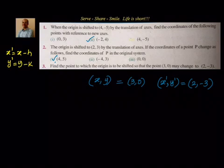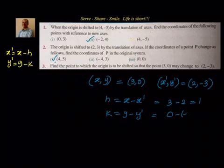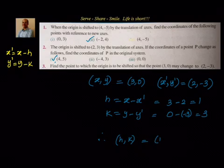Using the formula, x-dash equals x minus h, so h equals x minus x-dash. x is 3, x-dash is 2, so 3 minus 2 is 1. Similarly, k equals y minus y-dash. y equals 0, y-dash is -3, so 0 minus (-3) is 3. Therefore h, k is (1, 3).